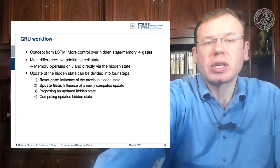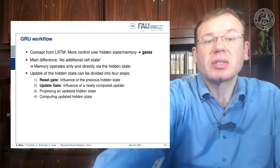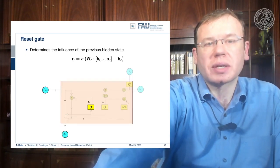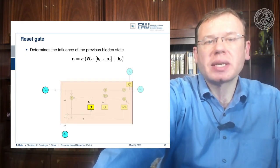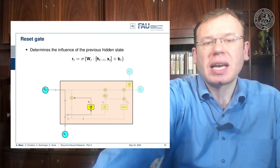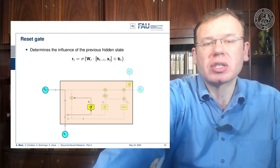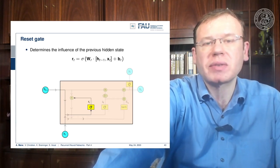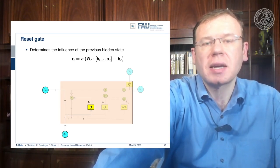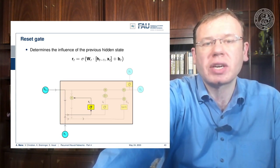First we determine the influence of the previous hidden state using a sigmoid activation function. We concatenate the input and previous hidden state, multiply with a weight matrix, add some bias, and feed it to the sigmoid activation function, which produces some reset value r_t.